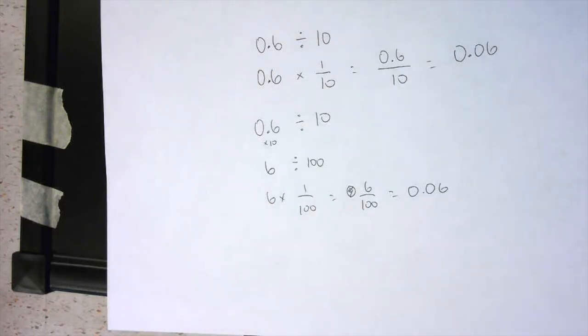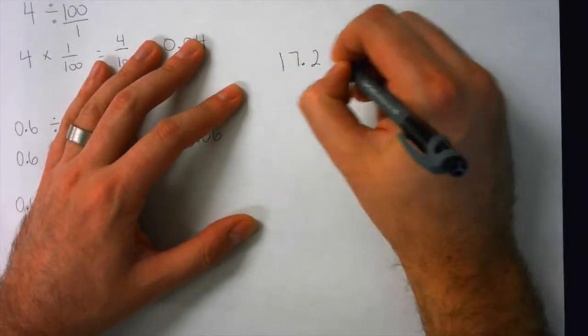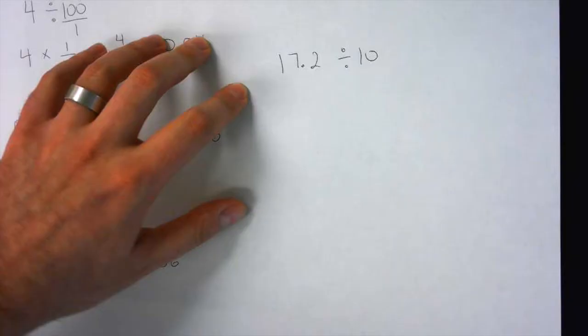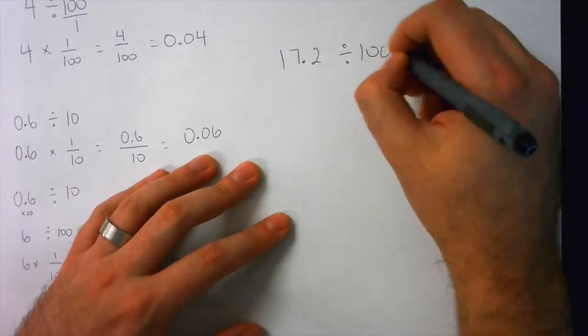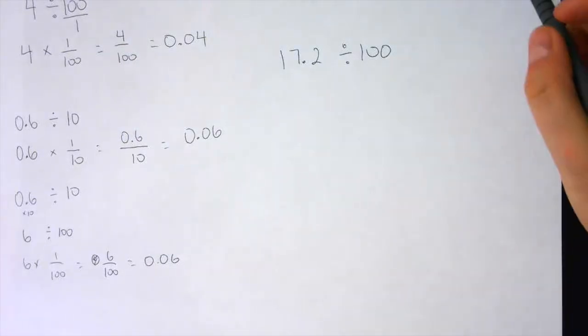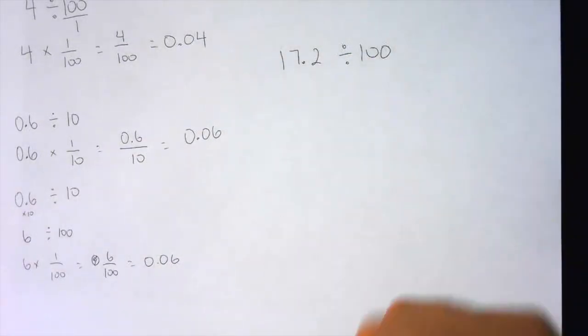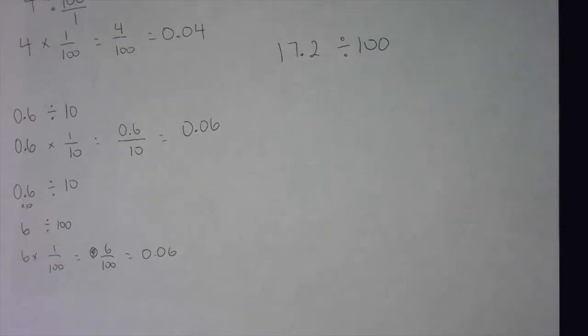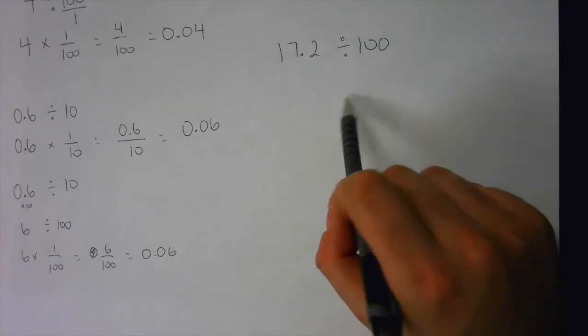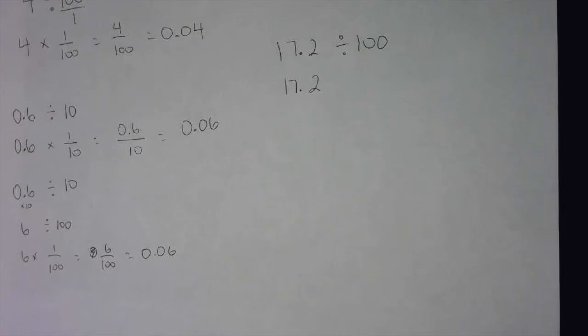Let's just do another one. Just a quick little one. 17.2. Let's try this one. Divided by 10. Divided by 100. Let's make this interesting. Let's have a little fun today. It's a rainy day outside. So 17.2 divided by 100. What do I do? Tell me what to do. So we have 17.2 divided by 100. 17.2 stays the same.